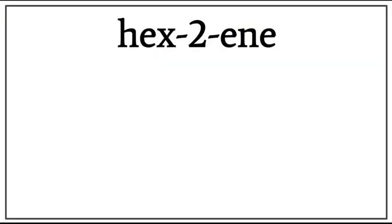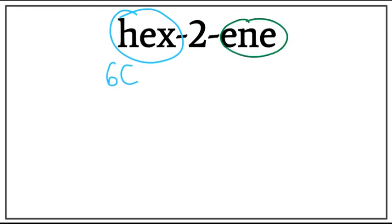Let's draw the structure for hex-2-ene. Hex tells us that there are six carbons present in the longest carbon chain. Ene tells us that this is an alkene, meaning that there is a double bond between carbons.